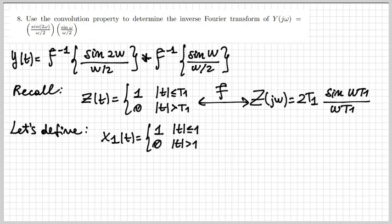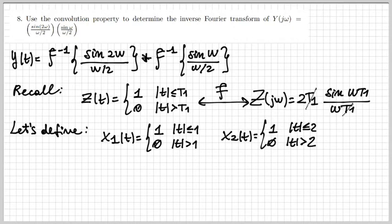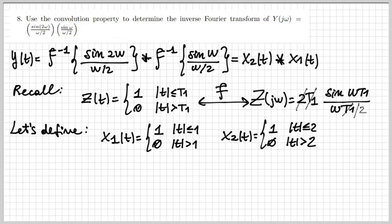If a signal z(t) equals one between -T₁ and T₁, its Fourier transform is 2T₁·sinc(ωT₁/π), written in standard sinc form. For convenience, I define x₁(t) as one between -1 and 1, and x₂(t) as one between -2 and 2. Simplifying, I find that sinc(2ω)/(ω/2) has anti-transform x₂(t), and sinc(ω)/(ω/2) has anti-transform x₁(t). Therefore, y(t) is given by the convolution between x₂(t) and x₁(t) — two rectangular pulses of different durations.